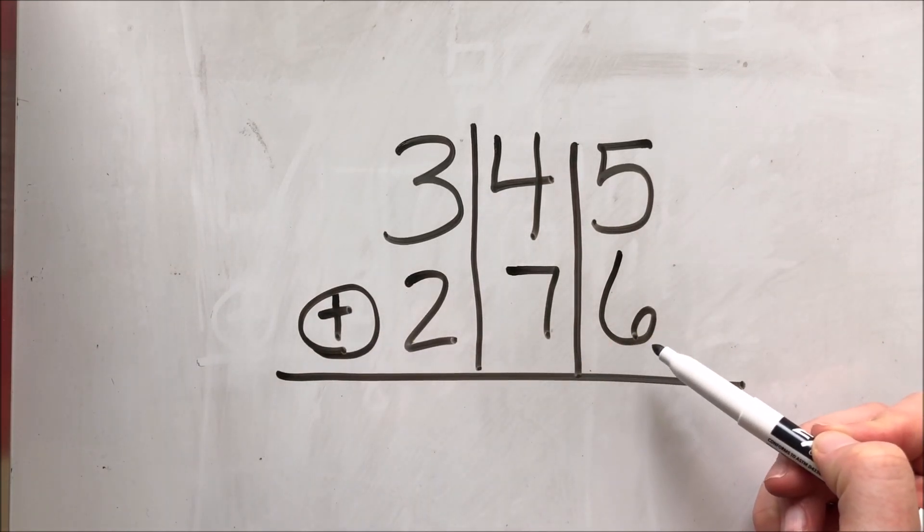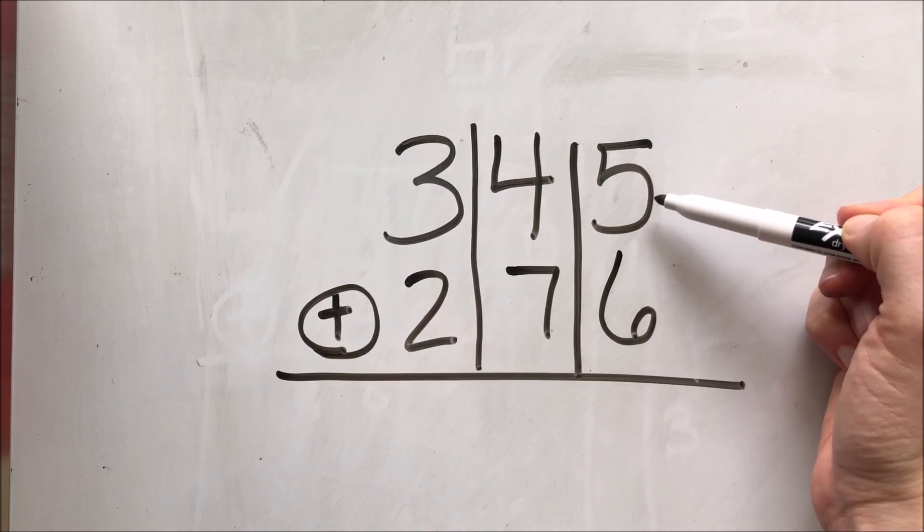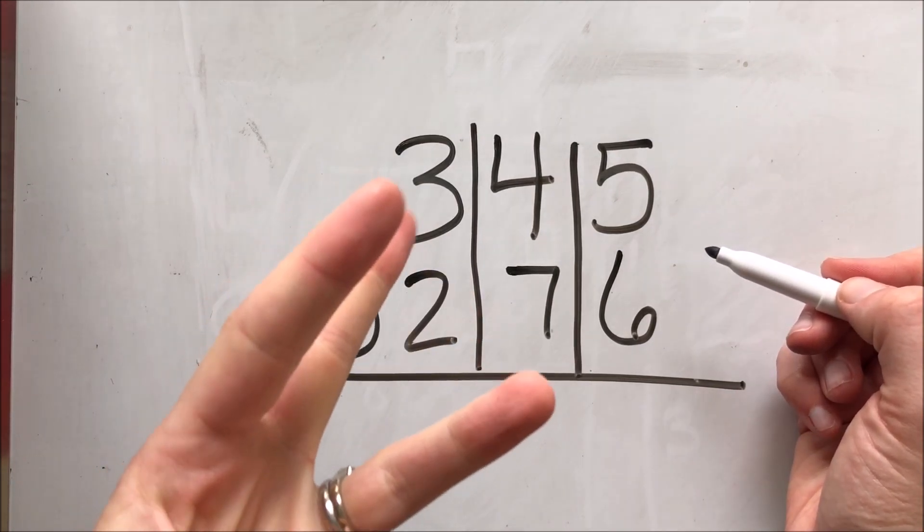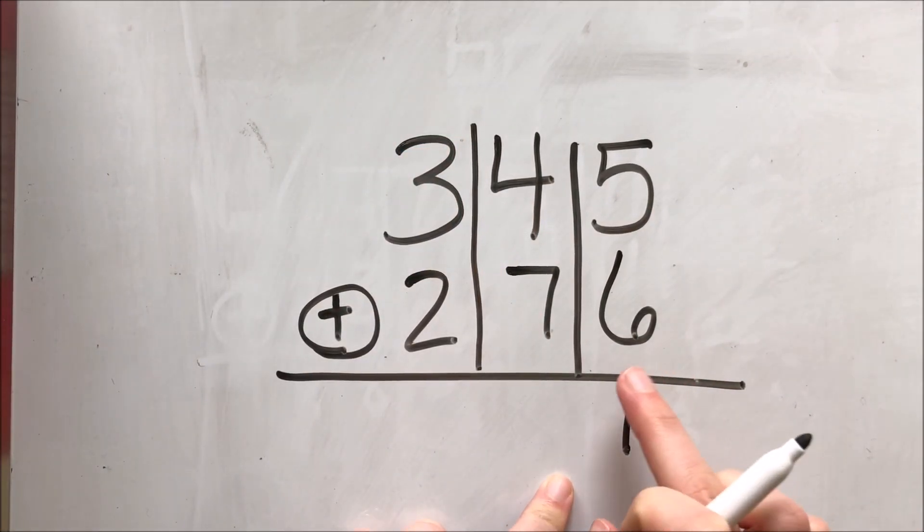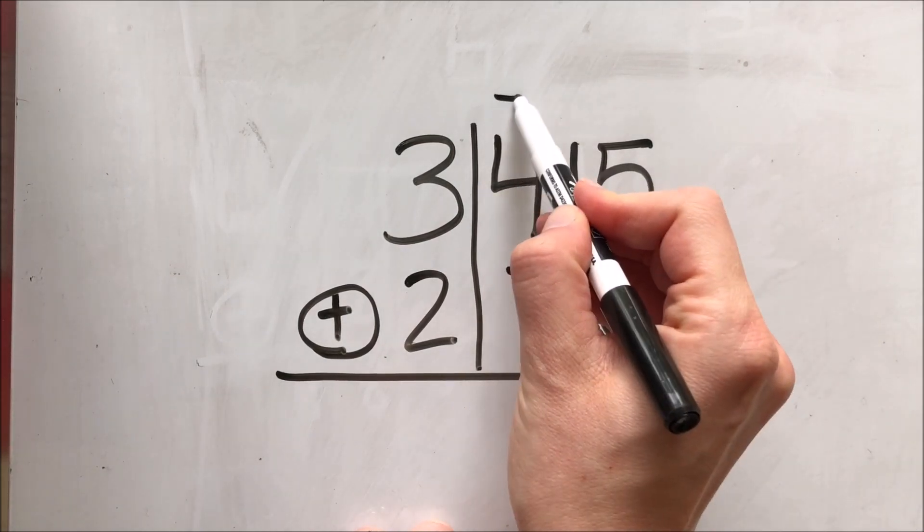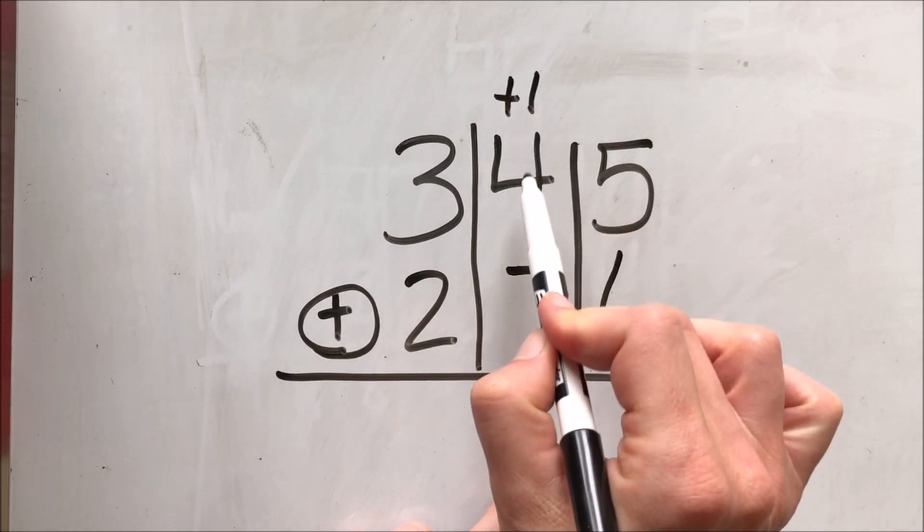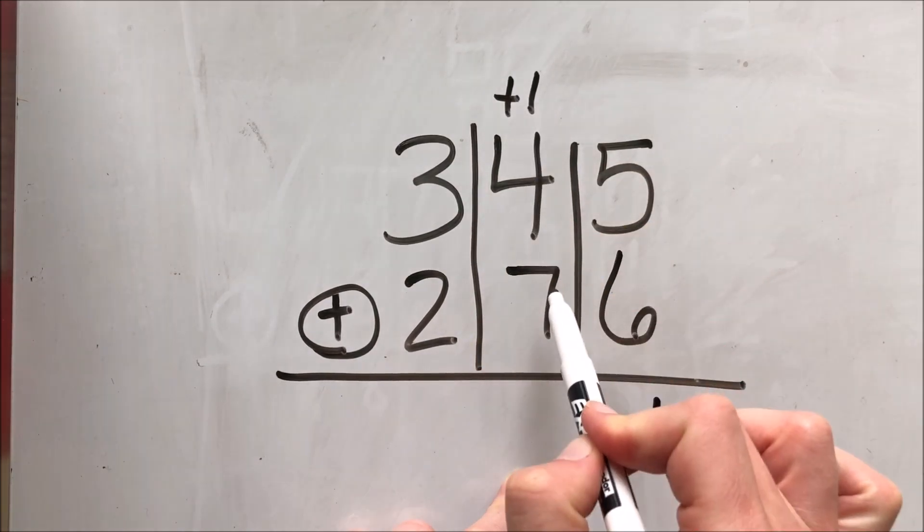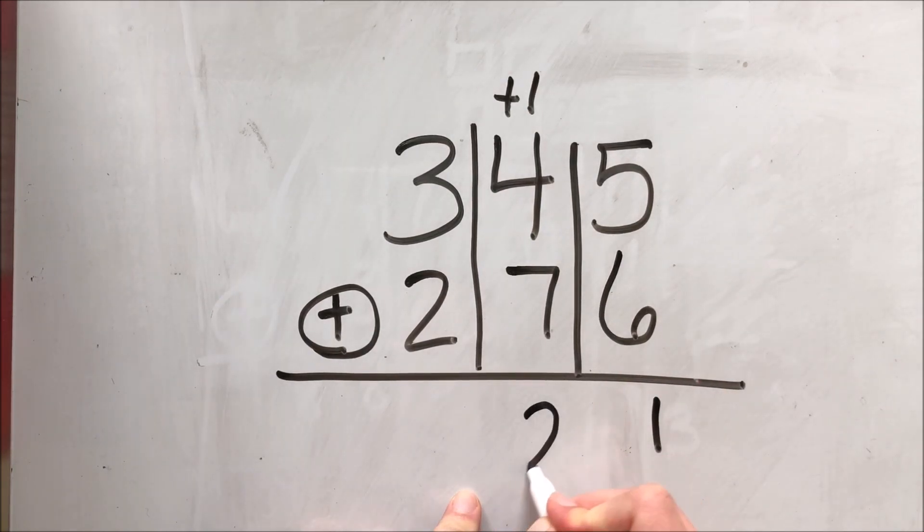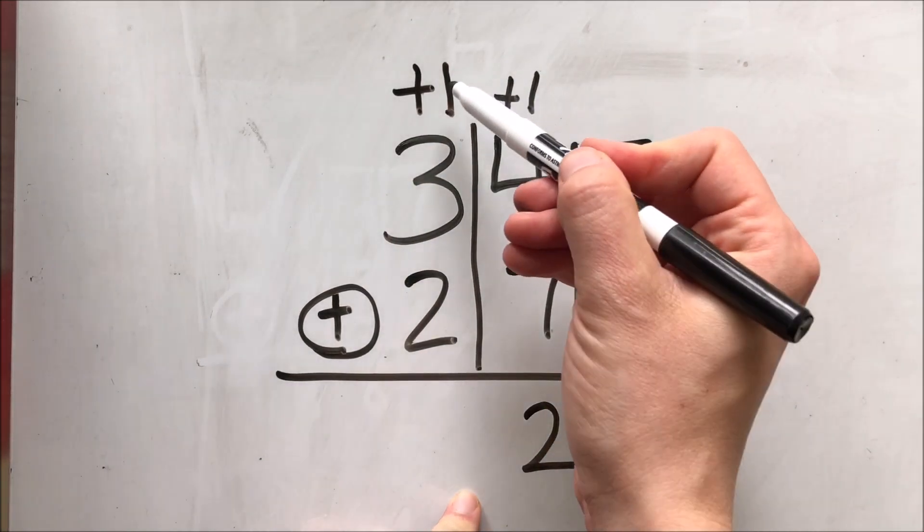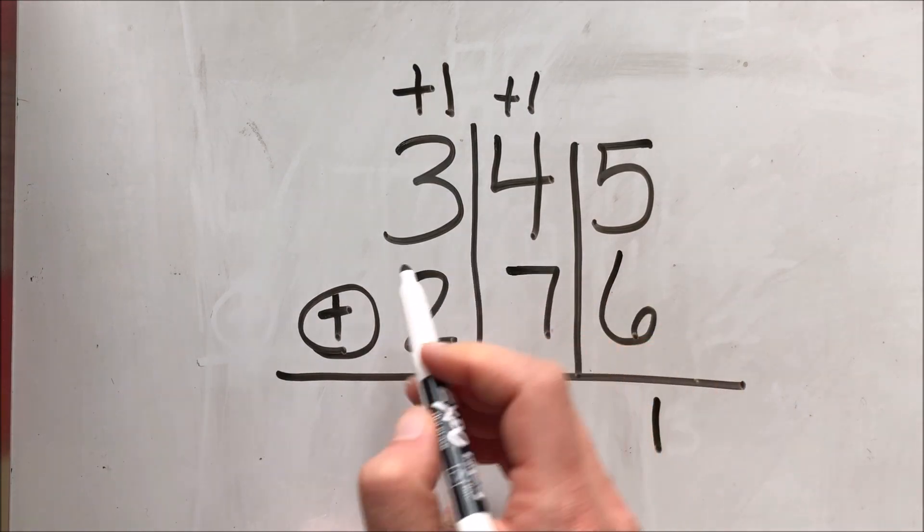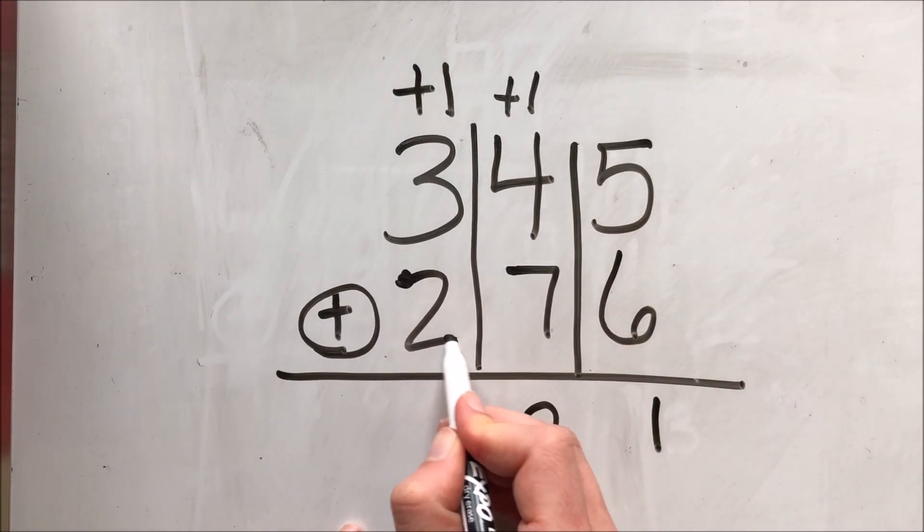I start over with the ones place. I have five plus six. I'm going to add on six to five. So five, six, seven, eight, nine, ten, eleven. So I can't keep eleven here. I have to regroup ten of those ones and turn it into a ten where I'm going to carry that one. Then I have one plus four is five and five plus seven is twelve. So I'm going to put my two here and regroup all of those tens into a one hundred or carry my one. One plus three is four and four plus two is six. And I have my sum of 621.